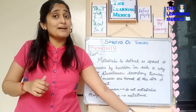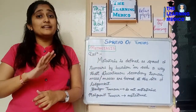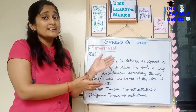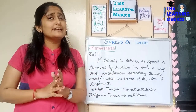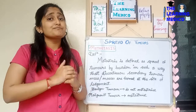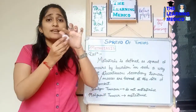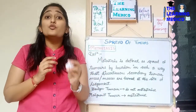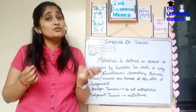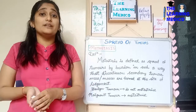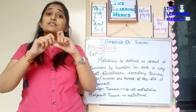Benign tumors do not undergo metastasis but malignant tumors do. This is because, as we saw in the previous video, benign tumors are encapsulated. Malignant tumors have no capsule, so they can divide, form a secondary tumor or mass, travel, and invade the healthy tissue.